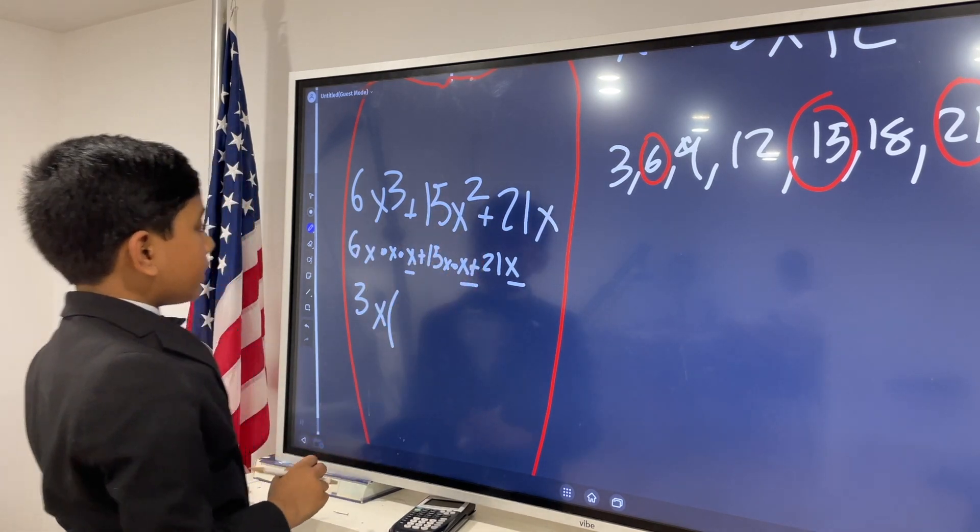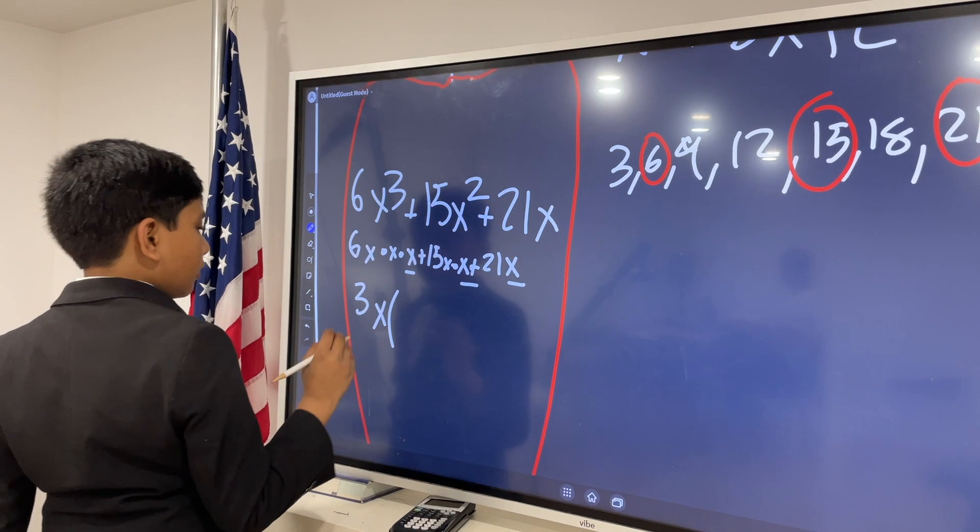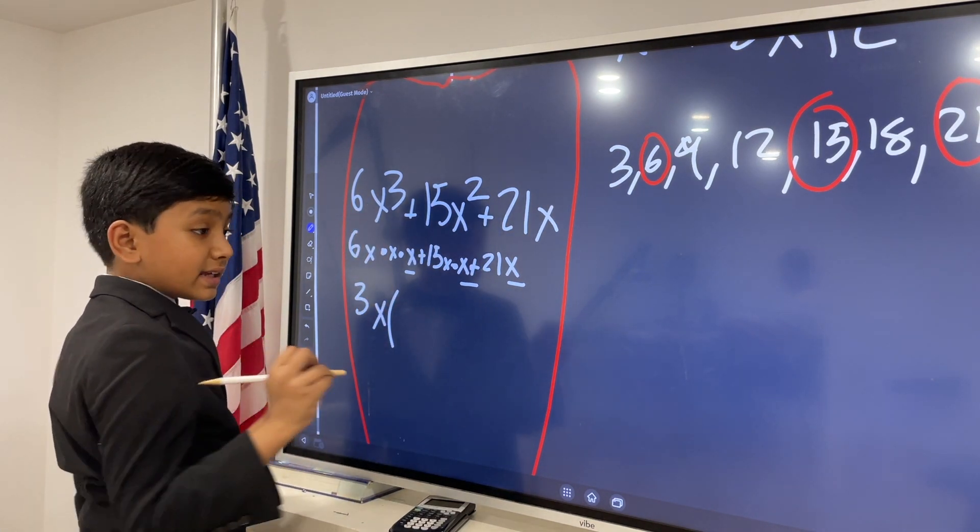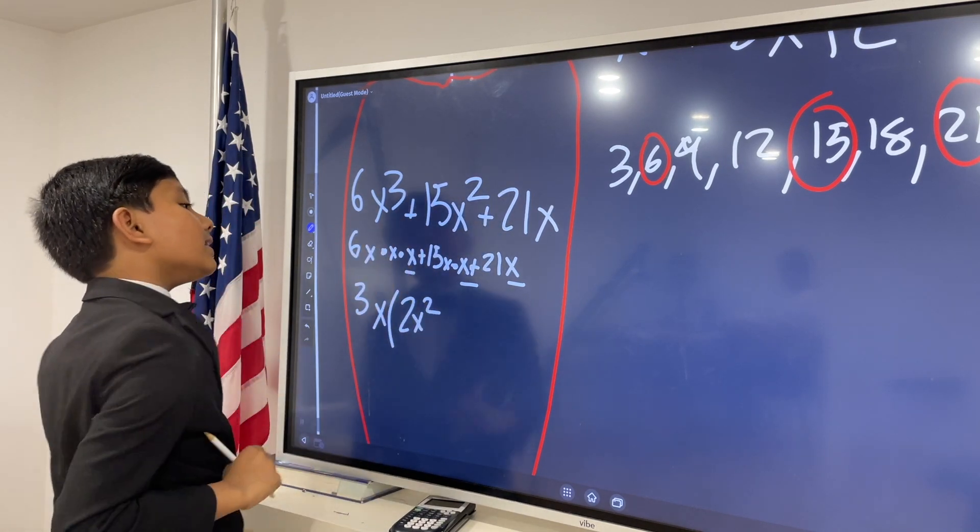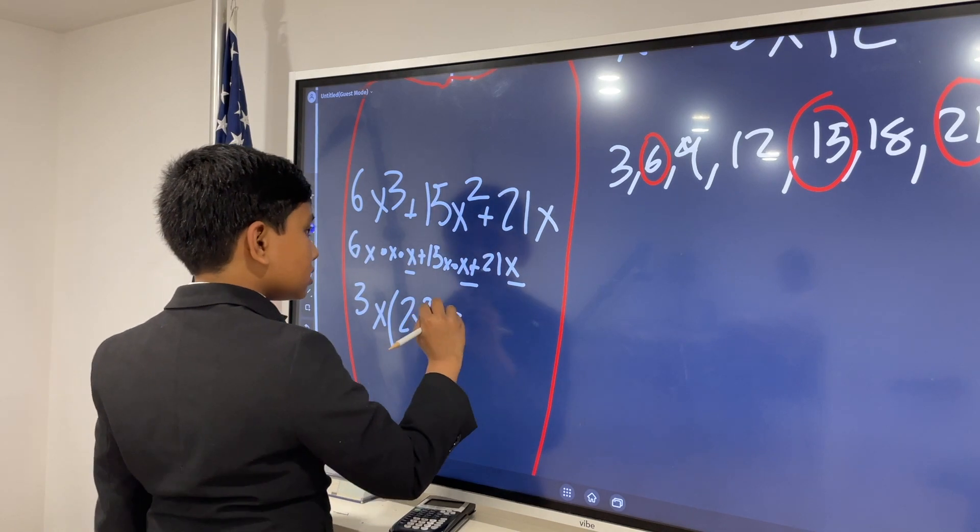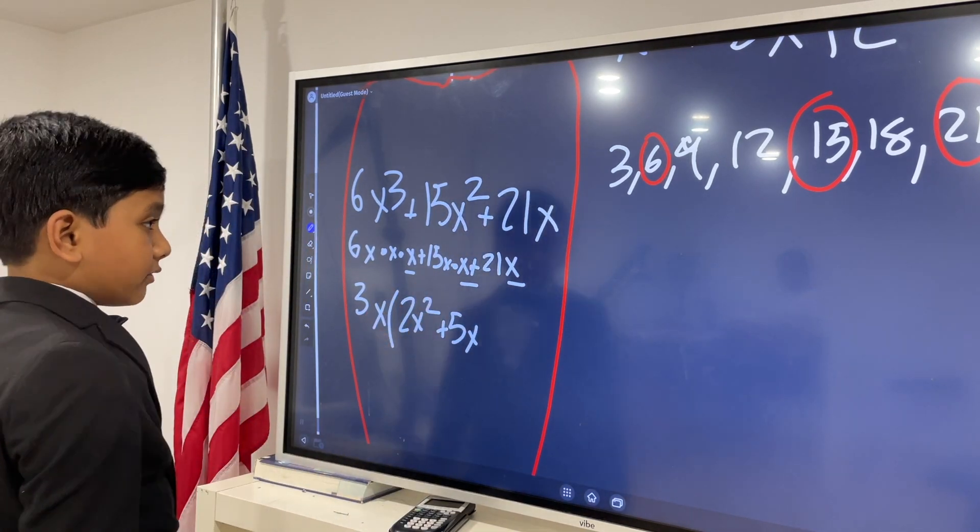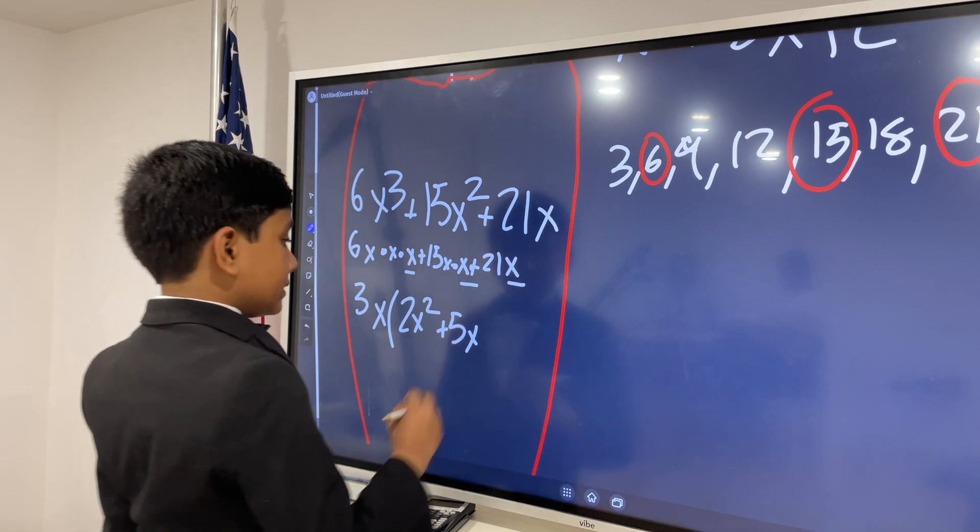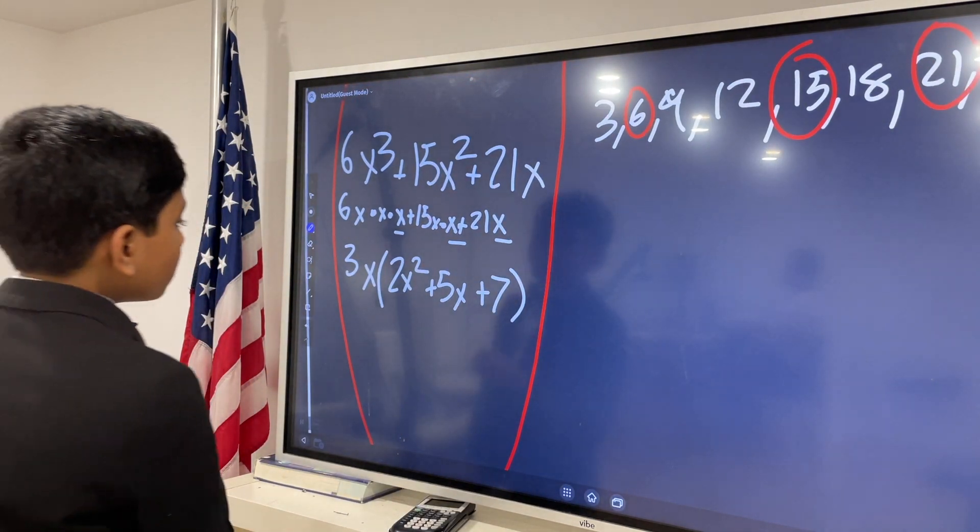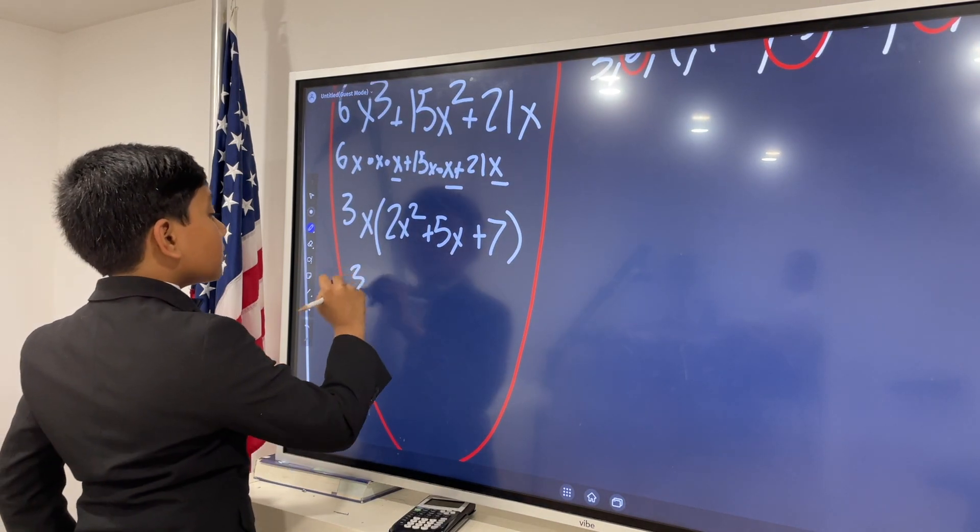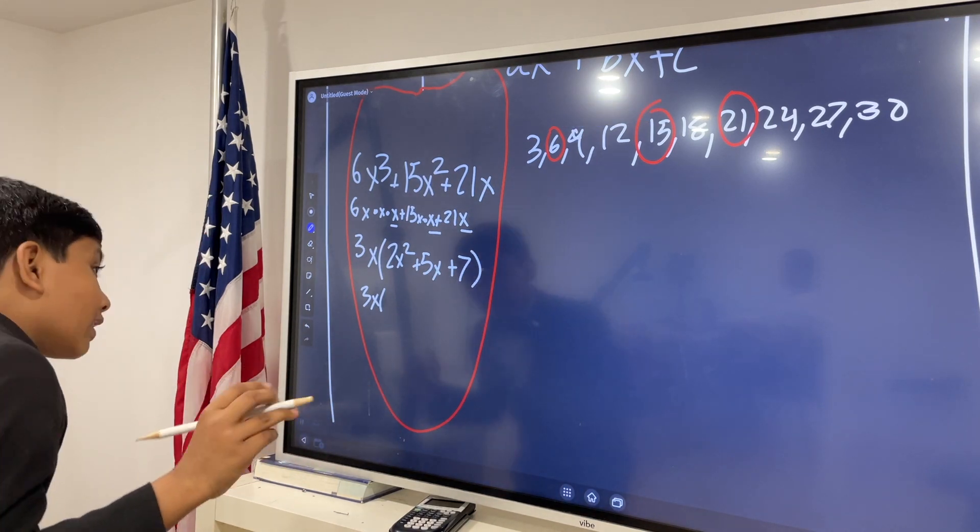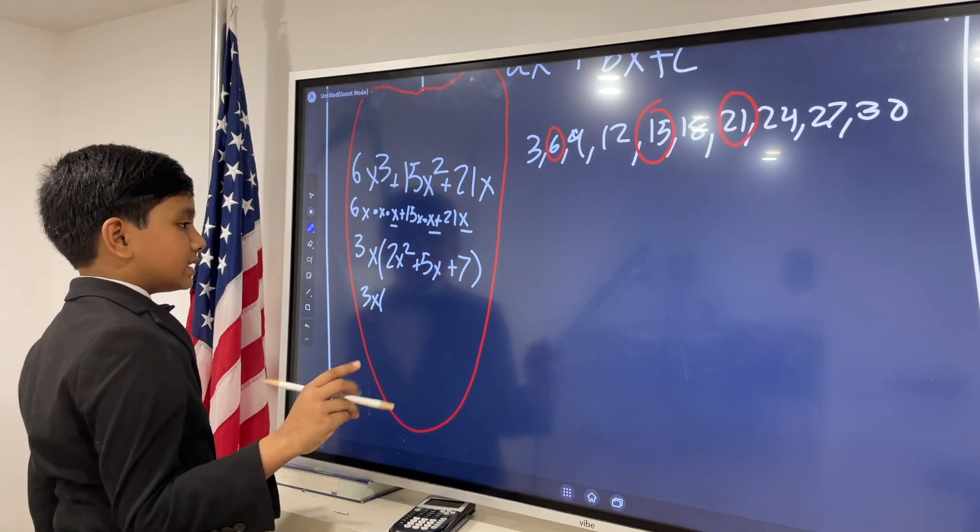Once we factor that out, we divide each term by 3x. So, 6x cubed divided by 3x is simply 2x squared. 15x squared divided by 3x is simply 5x. And 21x divided by 3x is equal to 7. Now, this has left us with the situation 3x times (2x squared plus 5x plus 7).